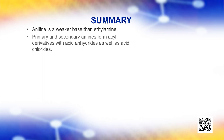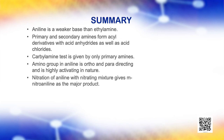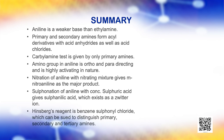To summarize the discussion, let us have a recapitulation of the major reactions. Aniline is a weaker base than ethylamine. Primary and secondary amines form acyl derivatives with acid anhydrides as well as acid chlorides. The carbylamine test is given by only primary amines. The amino group in aniline is ortho and para directing and is highly activating in nature. Nitration of aniline with nitrating mixture gives meta-nitroaniline as the major product. Sulphonation of aniline with concentrated sulfuric acid gives sulfanilic acid, which exists as a zwitterion. Hinsberg's reagent is benzene sulfonyl chloride, which can be used to distinguish primary, secondary and tertiary amines.